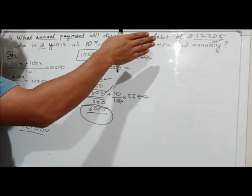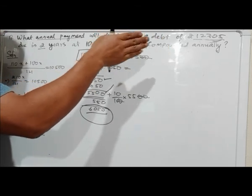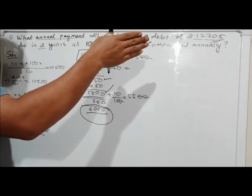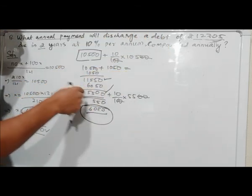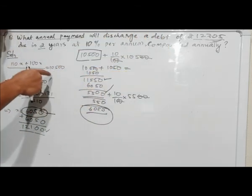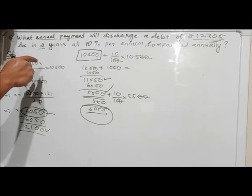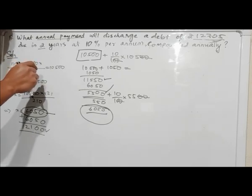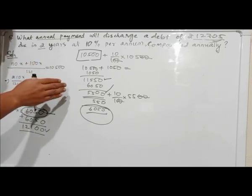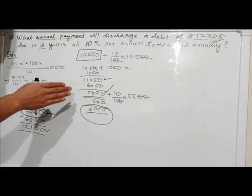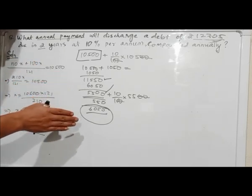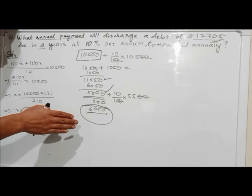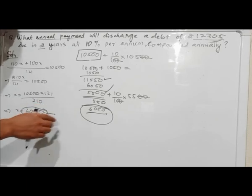It can amount to 12705. When you install the payment using the same compound interest tool, you can use the formula to find the correct installment.